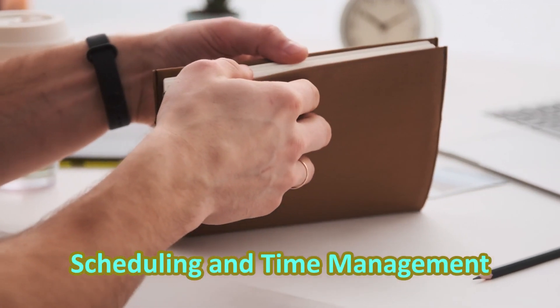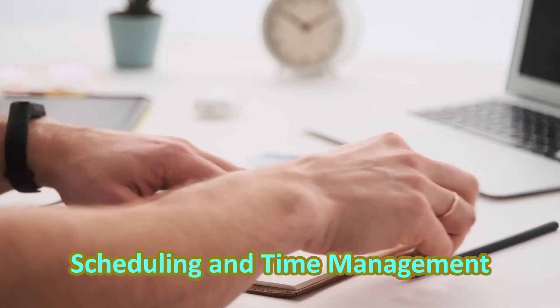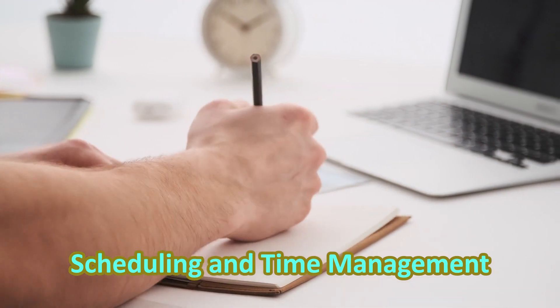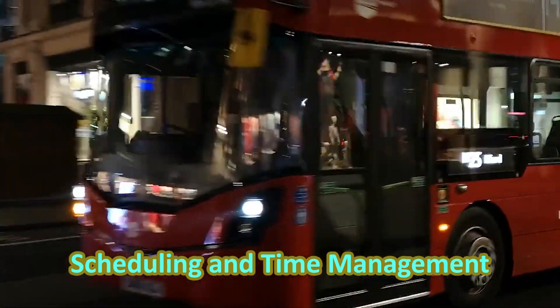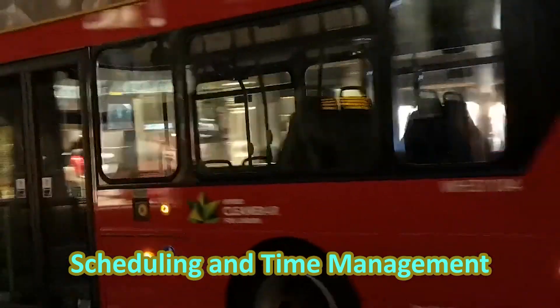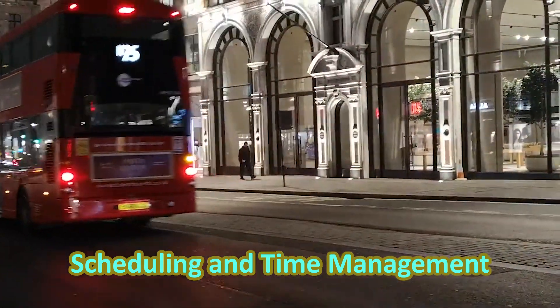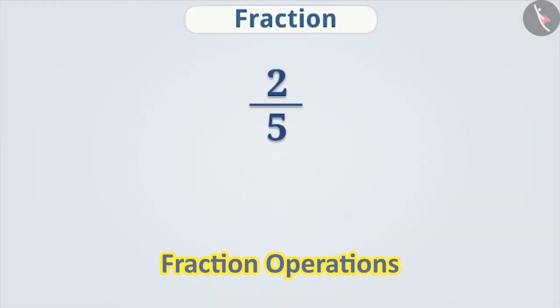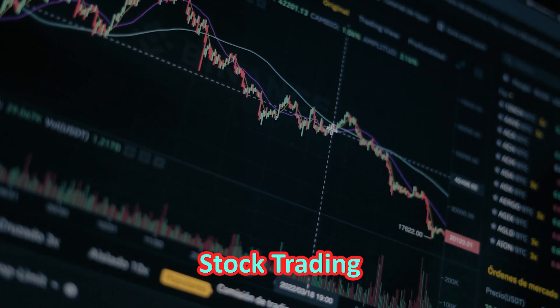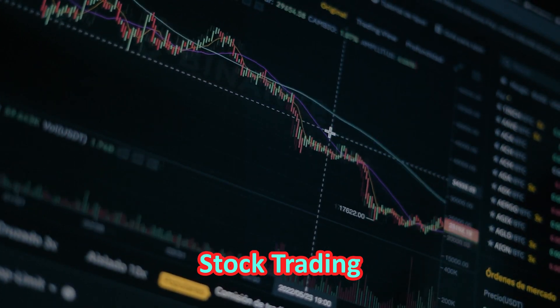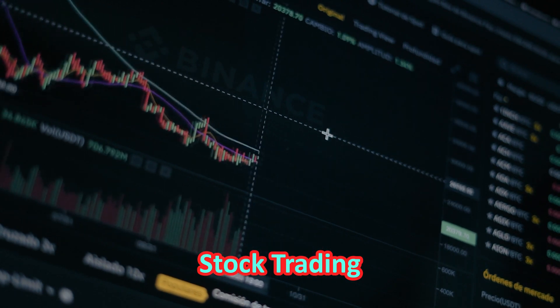LCM is used to find a common time for events or meetings that repeat at different intervals. For example, finding the LCM of different bus schedules to determine when the next bus will arrive, or when adding or subtracting fractions with different denominators, the LCM is used to find a common denominator. LCM is also used in financial markets for finding synchronized trading strategies or to detect recurring market patterns.